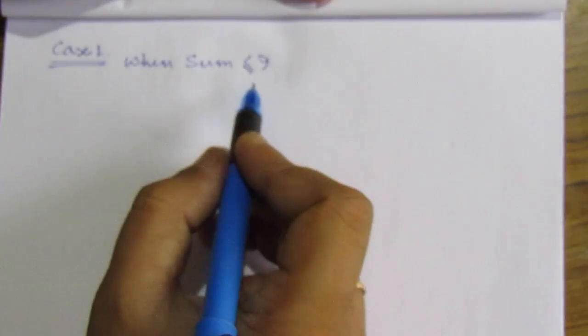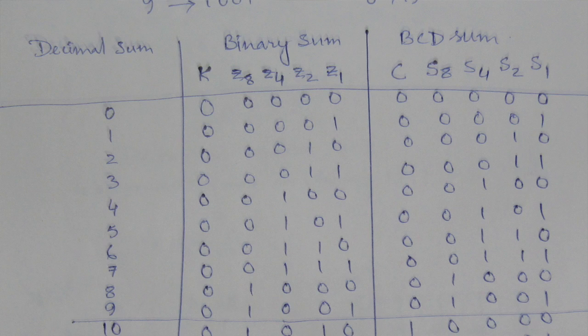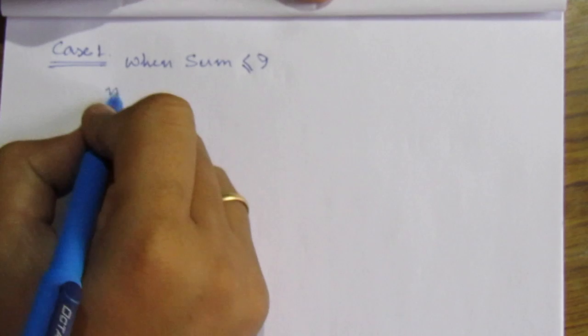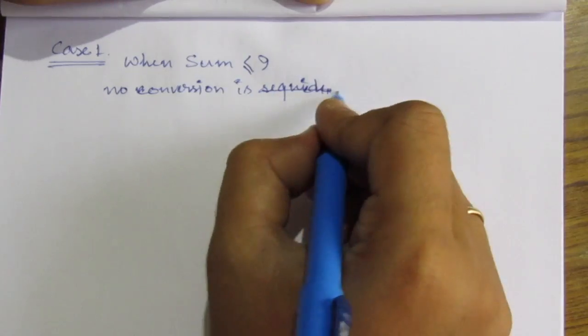Case 1: When the sum is less than or equal to 9, the corresponding binary sum and BCD sum are identical. Therefore, no conversion is required for this case.